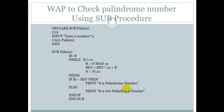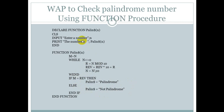This program checks palindrome number using a function procedure. A function procedure returns a value to the main module, so the print statement is in the main module. We declare the function procedure: function palind dollar is the name, and N is the parameter. CLS, take input.